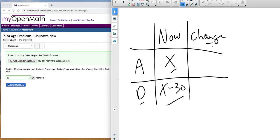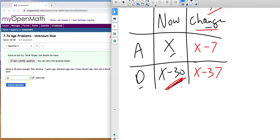Okay, so we don't know Adriana, but we know that David is 30 years younger. Seven years ago, so minus seven, seven years before now. So I'm going to take x minus seven to represent a change of seven and x minus 37, because now David, we're going to also subtract seven from that.